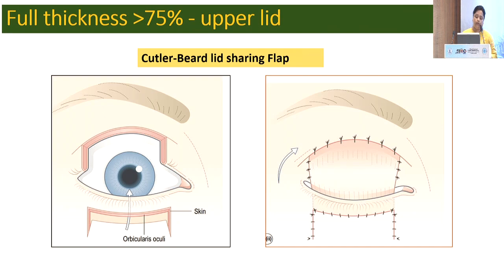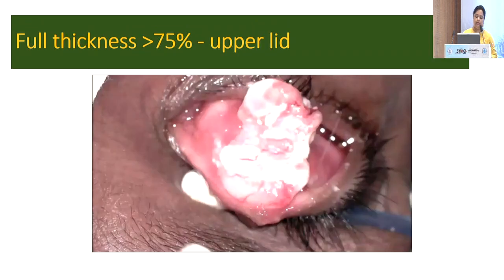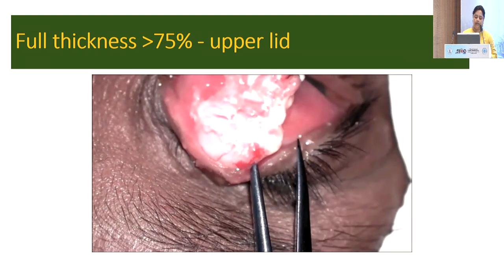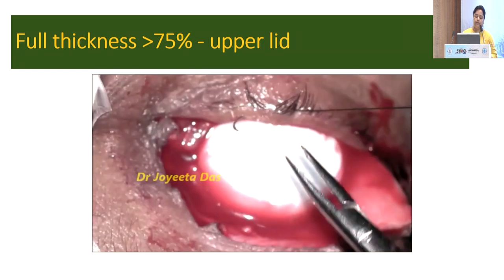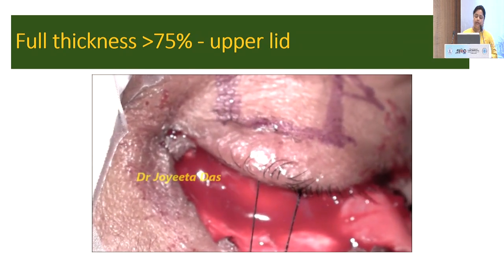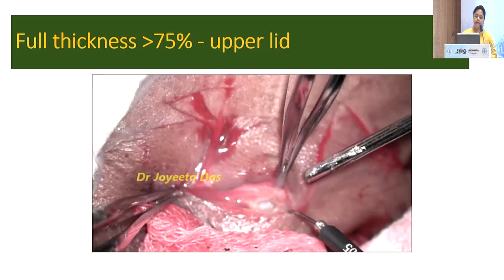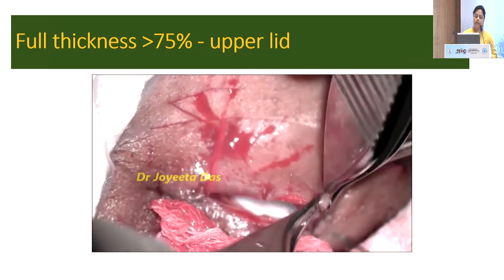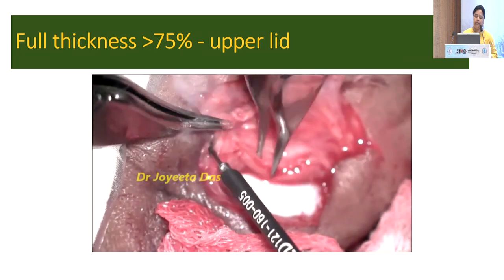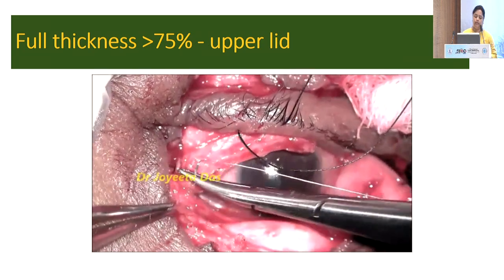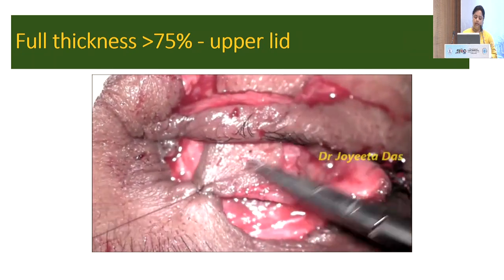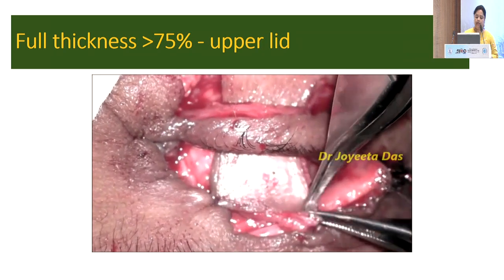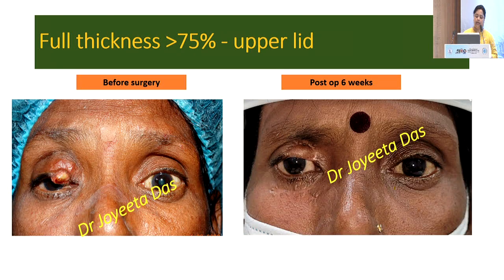If it is a more than 75% upper lid defect, the cartilage bear flap — that is, a full thickness flap from the lower lid — is the option. After taking the malignant tumour along with the frozen section, the defect is closed using a full thickness myocutaneous flap from the lower lid. The two lamellae are divided first. The posterior lamella is then advanced and sutured with the upper end of the defect. We should also take care to tie the LPS muscle along with the graft, and the skin-muscle layer is tied accordingly. After six weeks, the flap is divided. This is the pre- and post-op result.